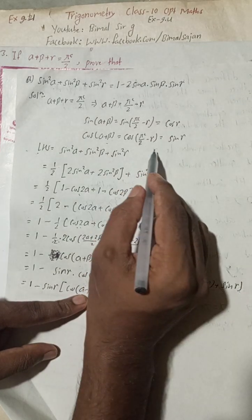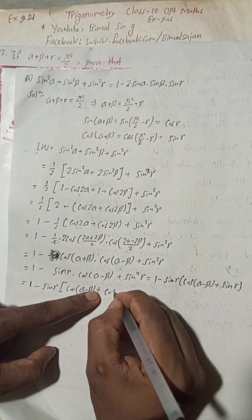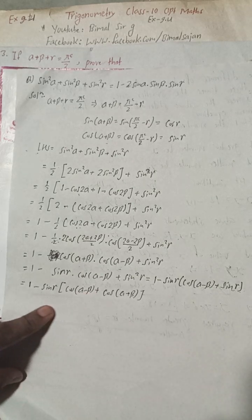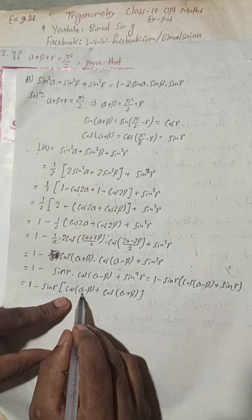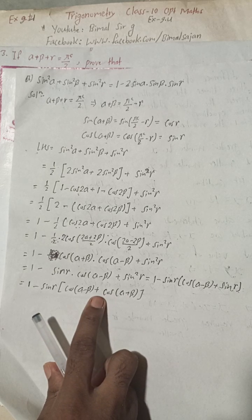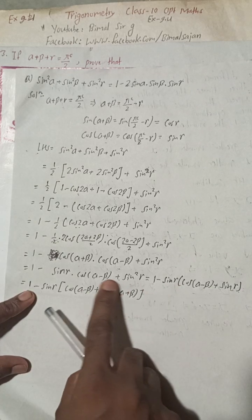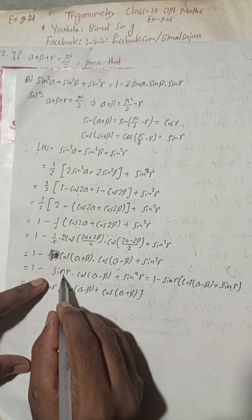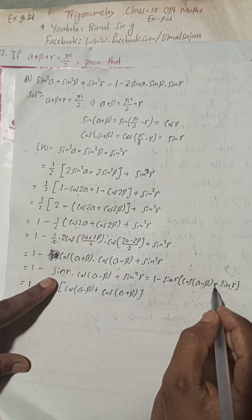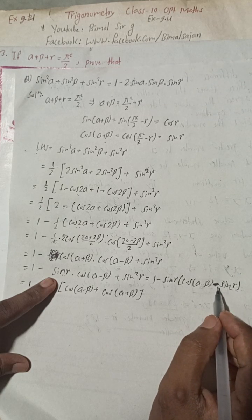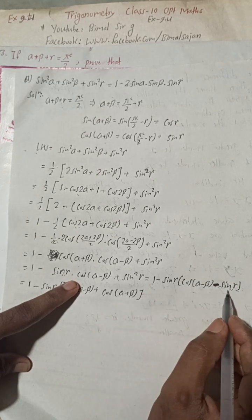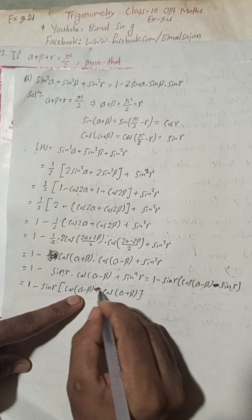Since sinγ = cos(α+β), we substitute again: 1 − sinγ·cos(α−β) + sinγ·cos(α+β)... Taking sinγ common: 1 − sinγ[cos(α−β) − cos(α+β)]. Note the sign carefully — minus because when we break it back, we must get the same expression.